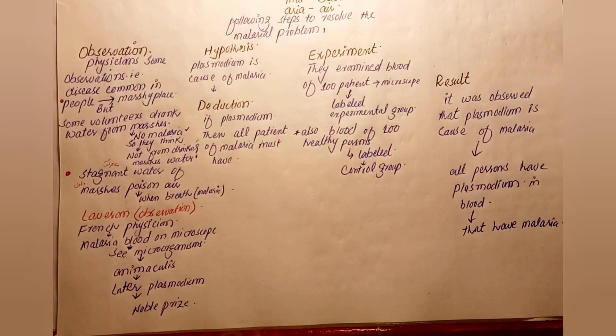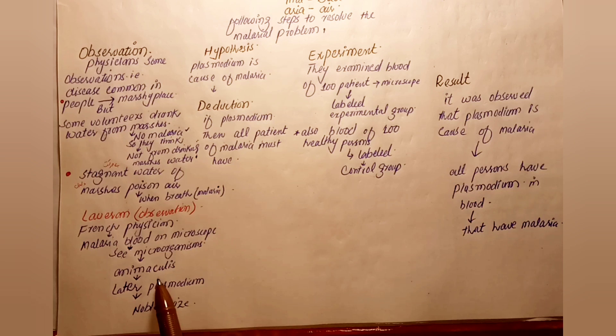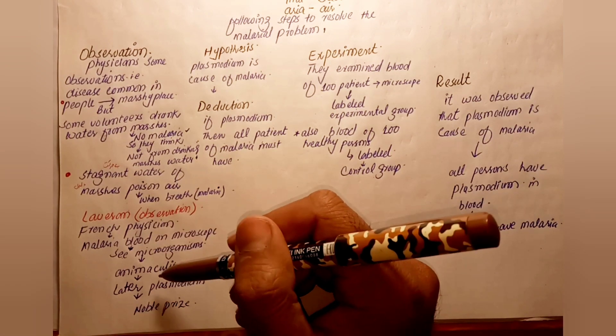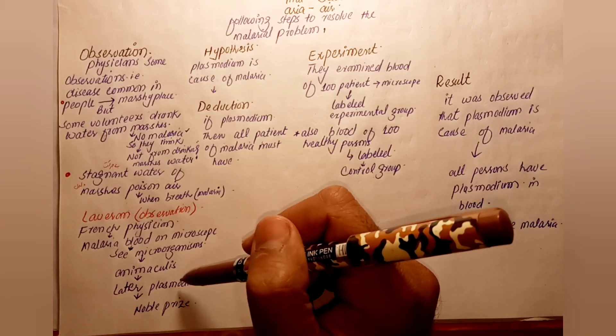The microorganism found in the blood was later named Plasmodium. This was a significant discovery - the observation that this organism called Plasmodium was present in malaria patients.